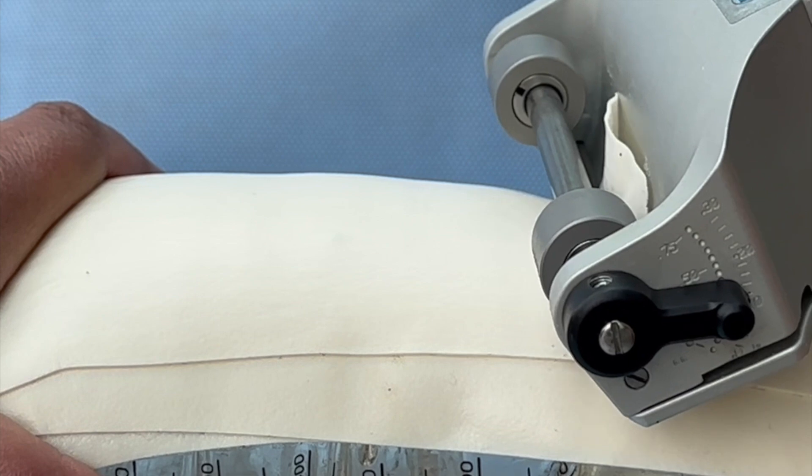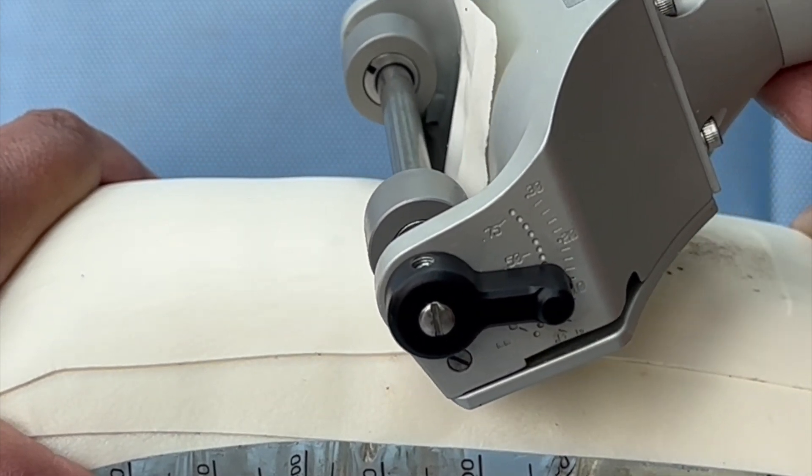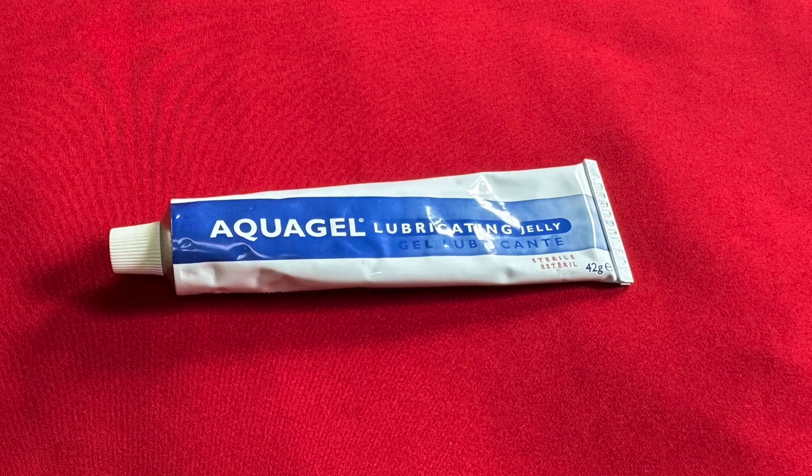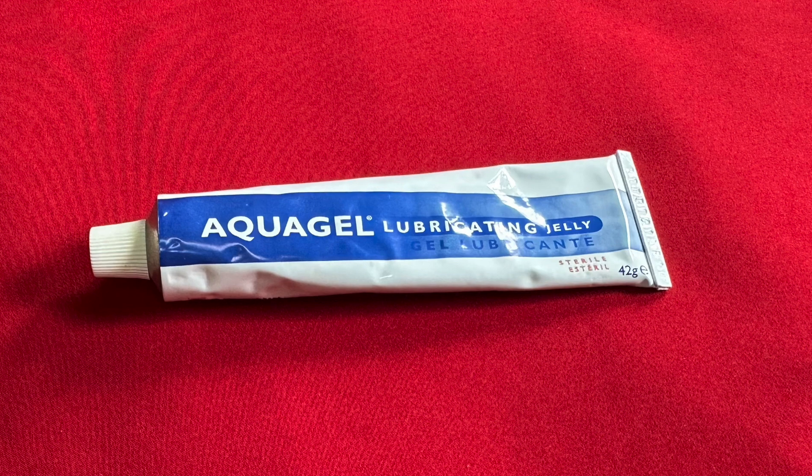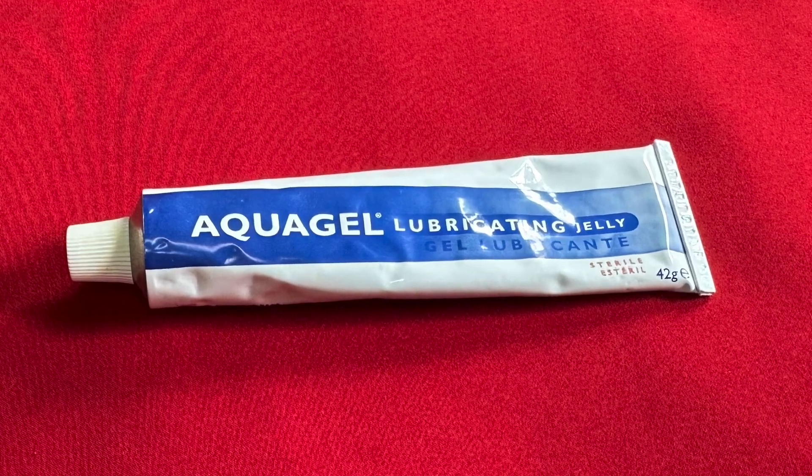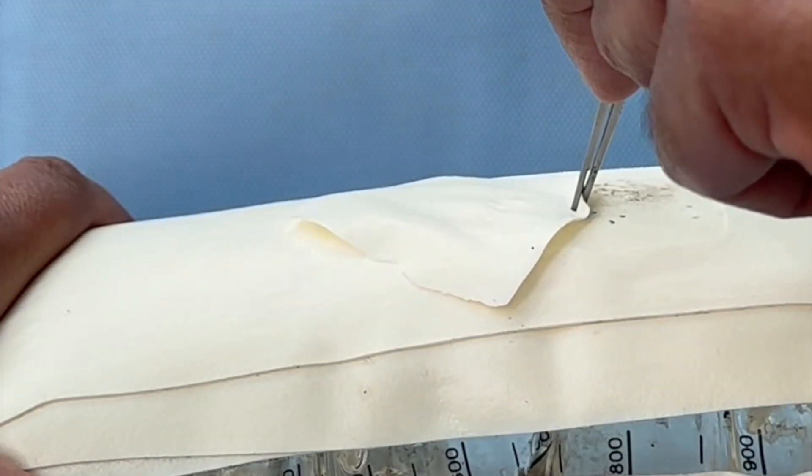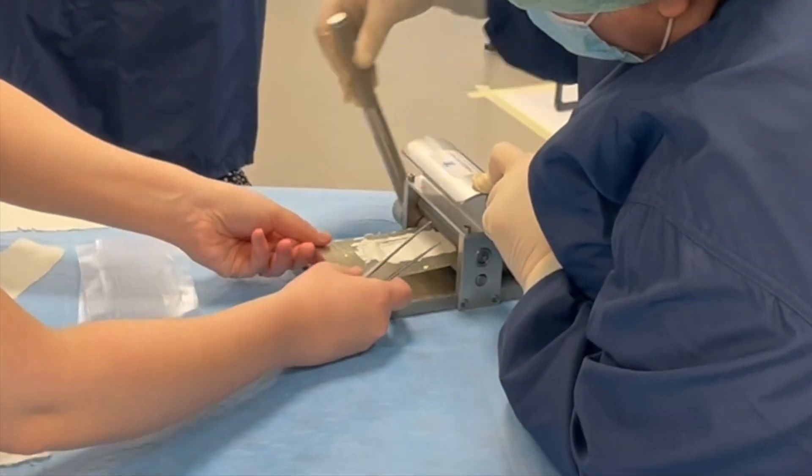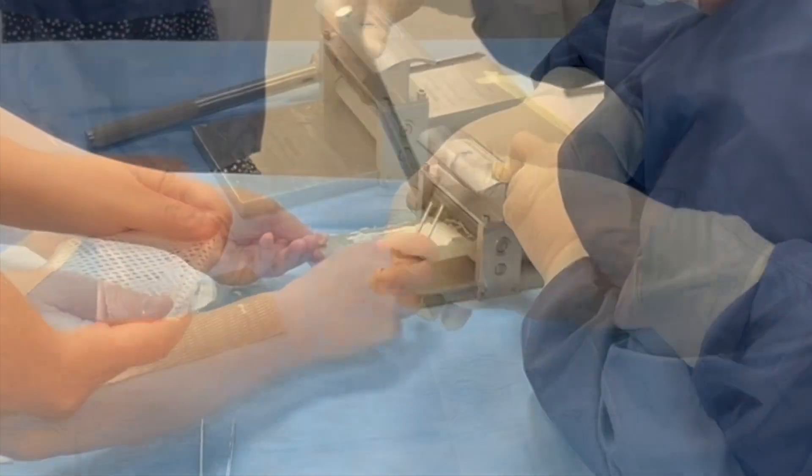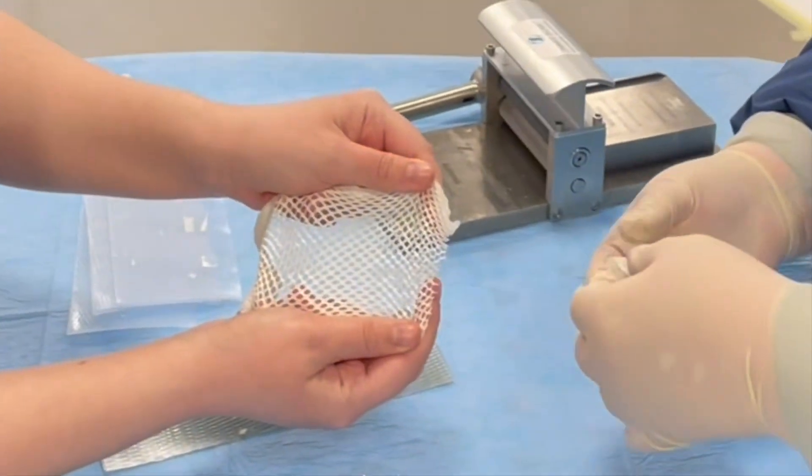And voila we now have a split thickness skin graft model which is ready to go. Like in real life a little bit of aqua gel or saline to lubricate the surface when you're taking the skin graft really helps. The quality of skin that is harvested is excellent. It's even good enough to be used in a standard skin graft measure to teach how to measure skin graft.